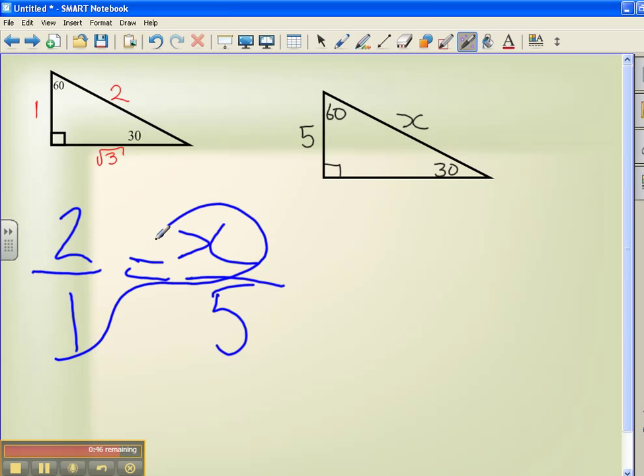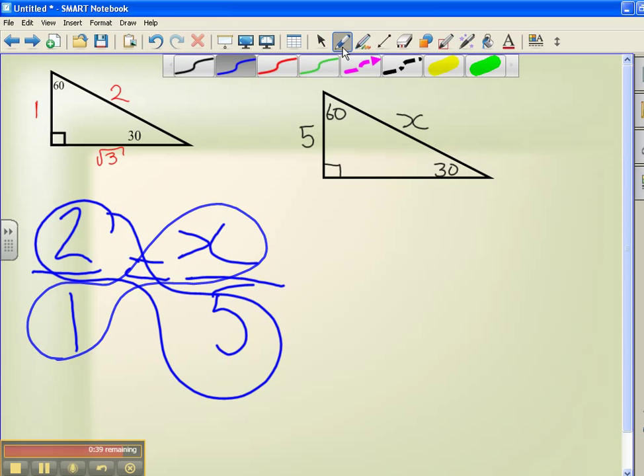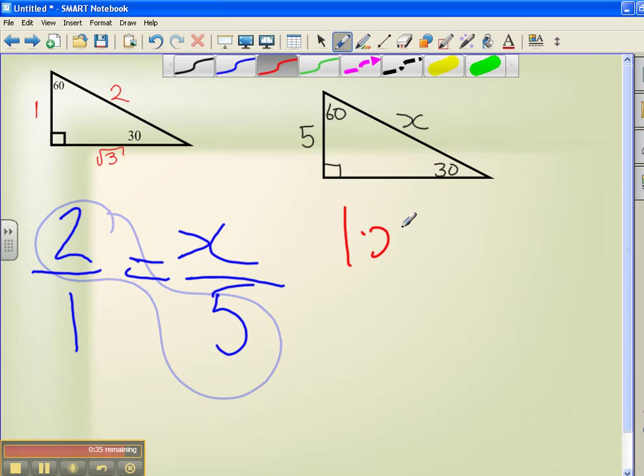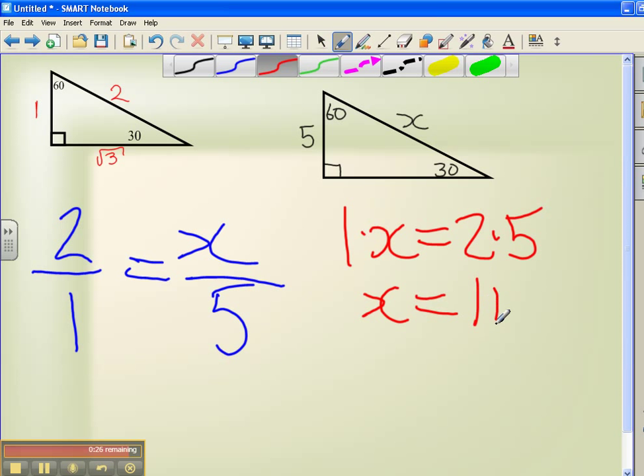So we do x times 1 and 2 times 5. So it looks like 1 times x equals 2 times 5. Well, 1 times x, we can just write x. 2 times 5 gives me 10. I now know how long that last leg is. That last leg is 10. And that's our answer.